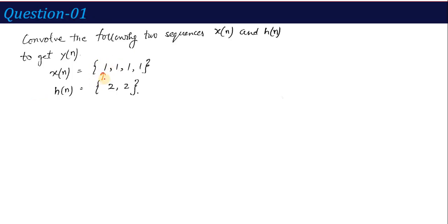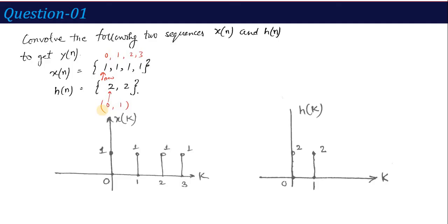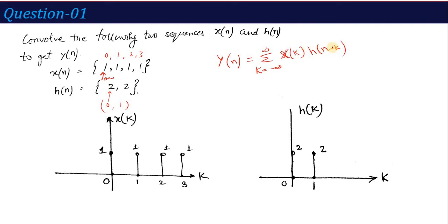When no arrow is defined, the first value is treated as n equals 0. So for X(n), values at n equals 0, 1, 2, 3 are all 1. Similarly for h(n), the value at n equals 0 is 2 and the value at n equals 1 is 2. As per the formula, Y(n) equals summation k equals minus infinity to infinity of X(k) times h(n minus k). I convert n to k, so X(k) has values 1, 1, 1, 1 for k equals 0, 1, 2, 3. For h(k), both values at k equals 0 and k equals 1 have amplitude 2.